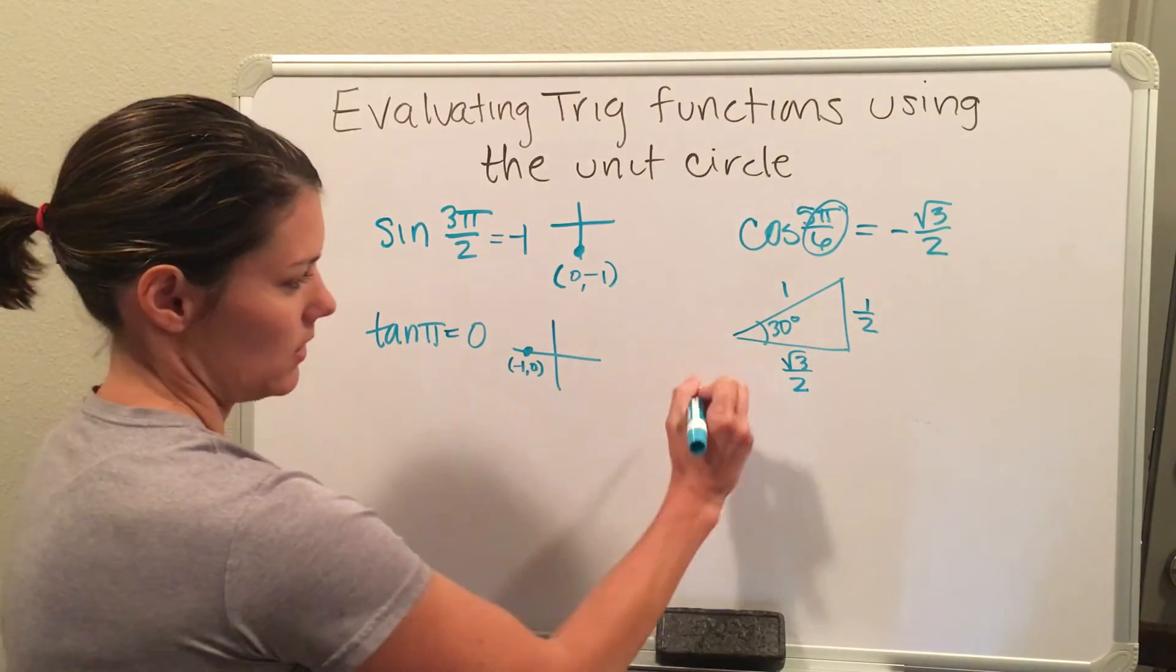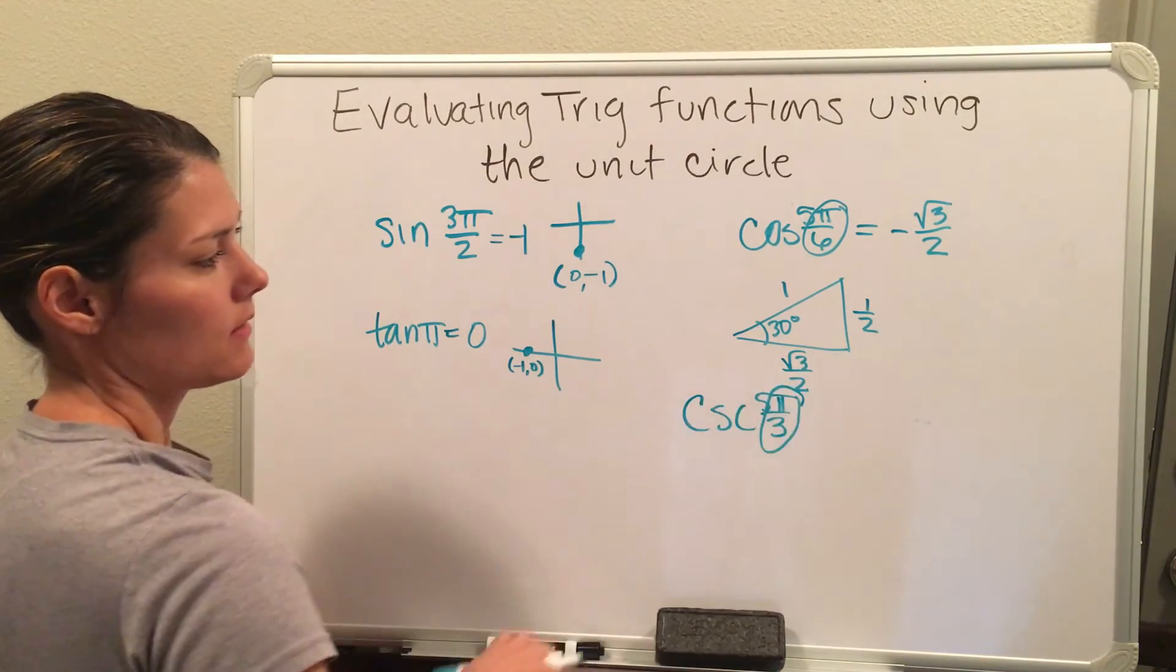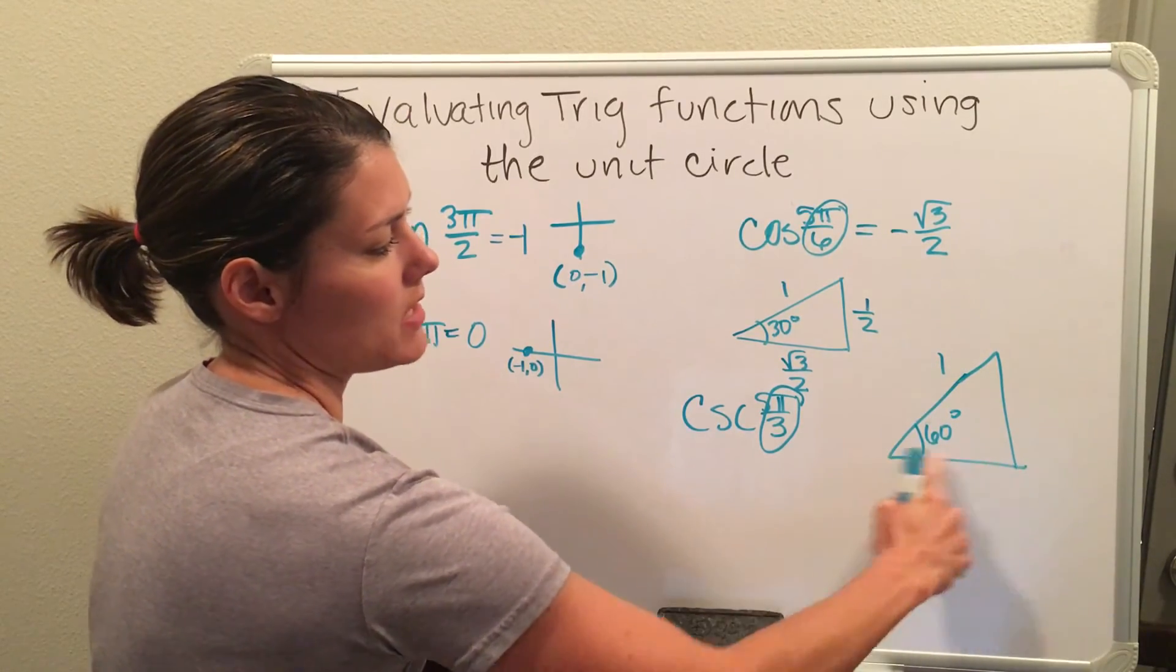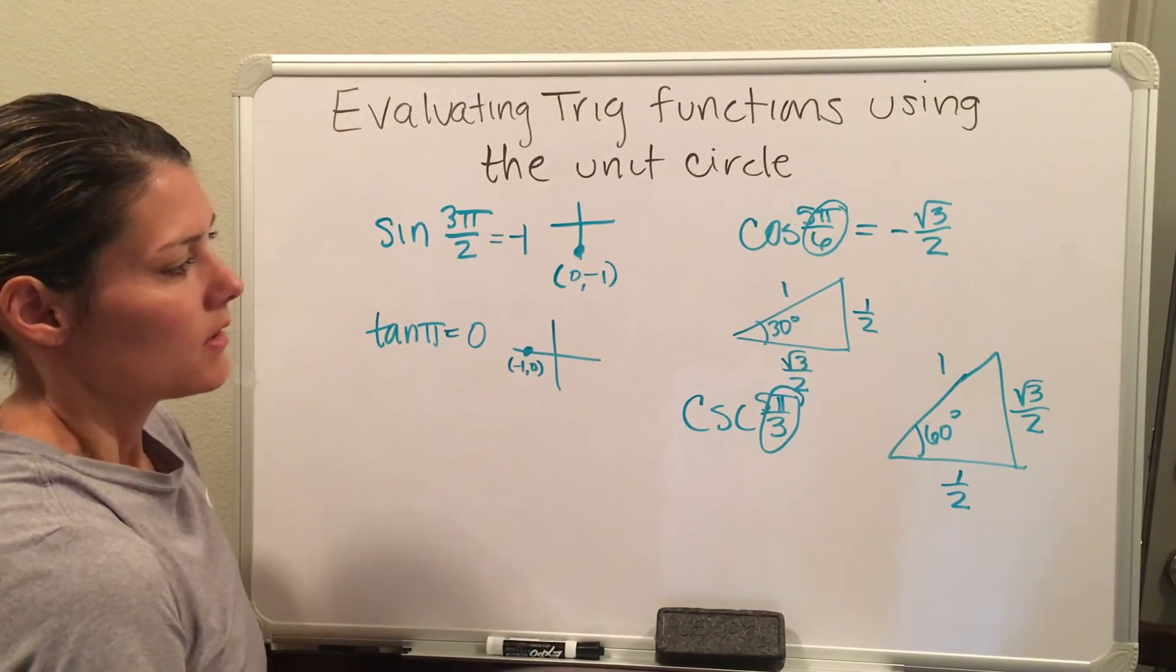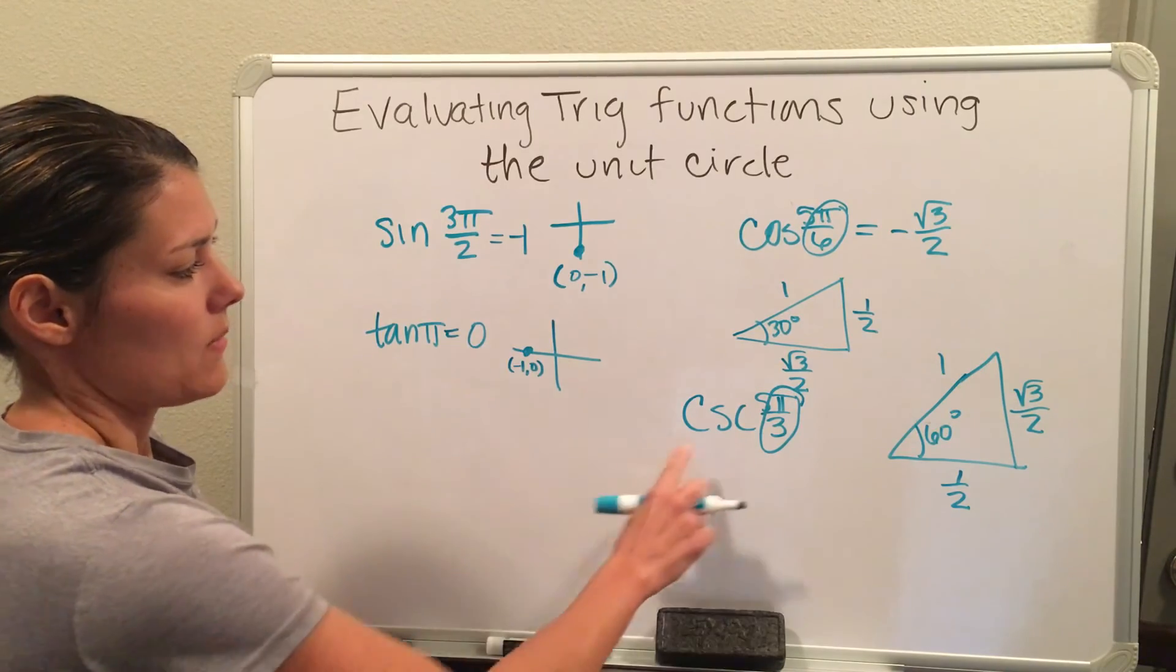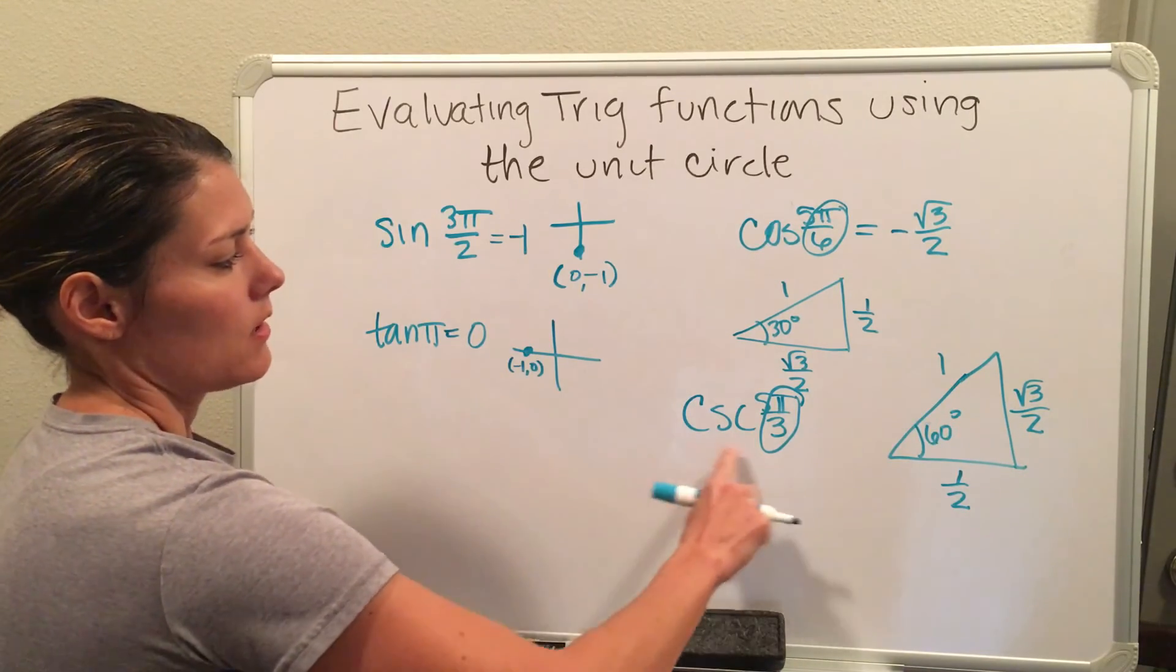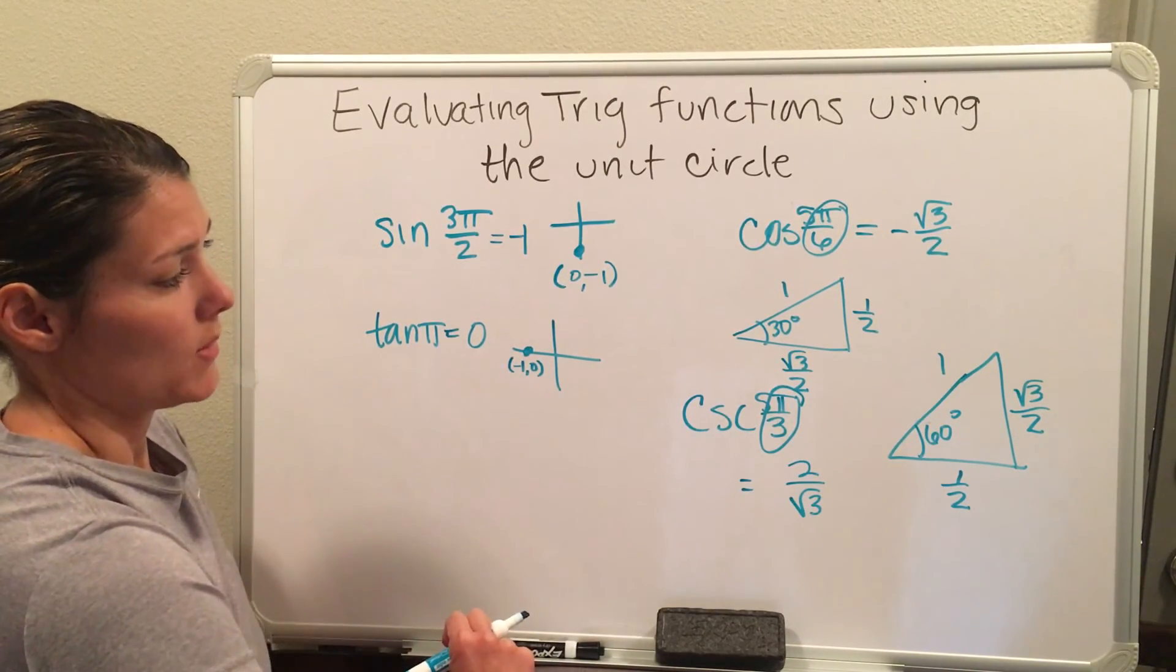Another example is if I want to do cosecant of 5π over 3. Again, this is a π over 3, and so that is my 60 degree triangle. So I will recreate the 60 degree triangle. Again, it's a unit of 1, but now my short leg is down here on the x value, and then my long leg is on my y value. This one's a little bit trickier because this is a reciprocal trig function. Cosecant is the reciprocal of sine. So that means I need to take my y value, and I need to turn it over. So sine of π over 3 is √3 over 2. Cosecant of π over 3 is 2 over √3.